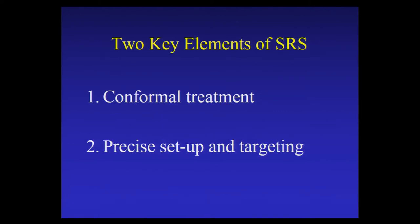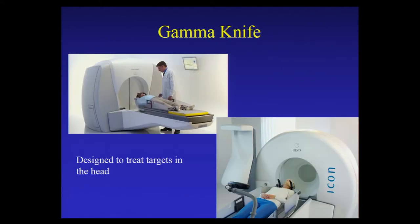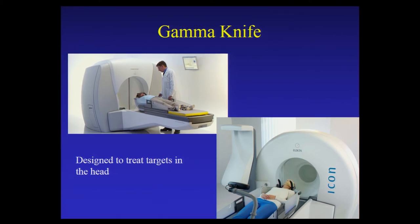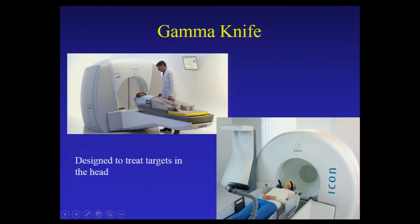There are two key elements of stereotactic radiation: conformal treatment, as well as precise setup and targeting. For targets within the head, there are many tools available to deliver stereotactic radiosurgery. The tool we use is called the gamma knife — specifically the gamma knife perfection shown here on the left. A patient lies on the treatment couch with a head frame that immobilizes and anchors to the skull. The patient is advanced into a radiation machine with 192 cobalt sources directed at the tumor, and it's designed primarily to treat targets in the head.